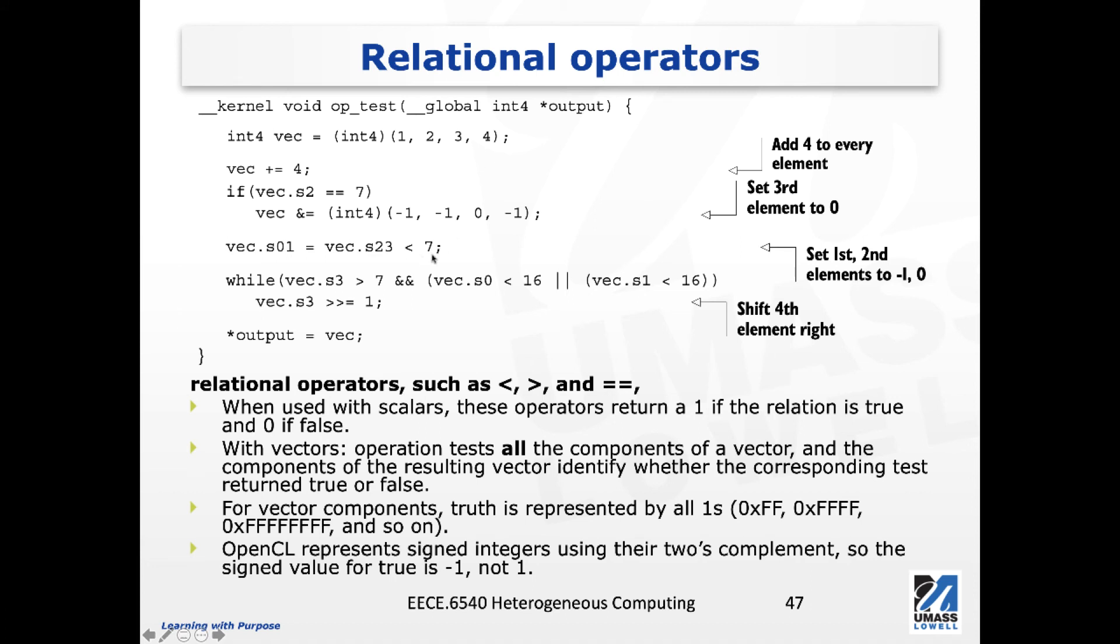And this comparison, we're going to compare this 0 and 8 with this scalar value respectively. 0 is of course less than 7, but 8 is not less than 7. So we now have a comparison result which is true and then false. So we represent true with minus 1 and false with 0. You can expect that the first element of this vector will be a minus 1, or all f's, and then this second element is a 0.